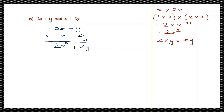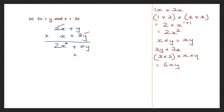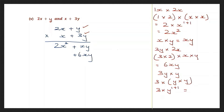Now we're going to multiply 3y into 2x: 3y into 2x is 3 into 2 into x into y — there's only 1x and 1y — so 3 twos are 6xy. Let's put it in the xy column: 6xy. Now let's multiply 3y into y: 3y into y is 3 into y into y, which is 3 into y to the power of 1 plus 1, giving 3y squared. Let's write plus 3y squared separately.